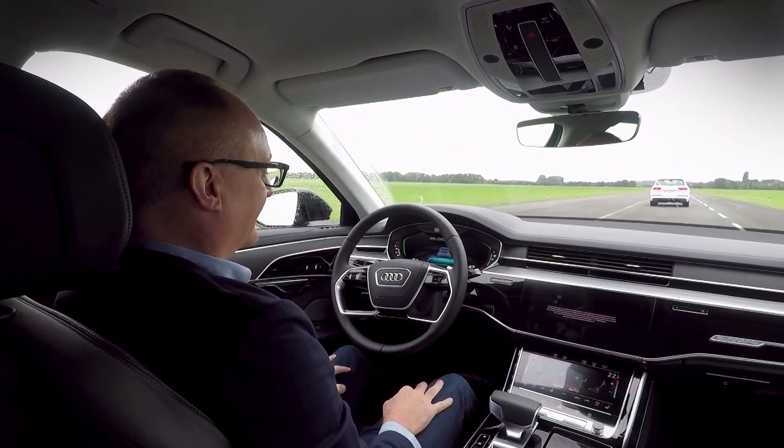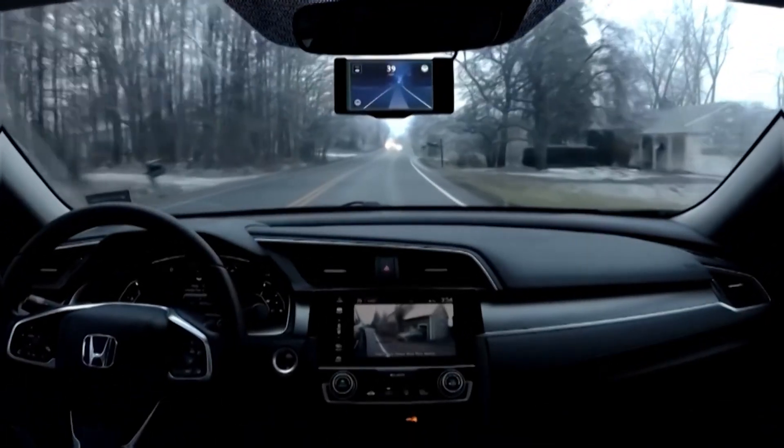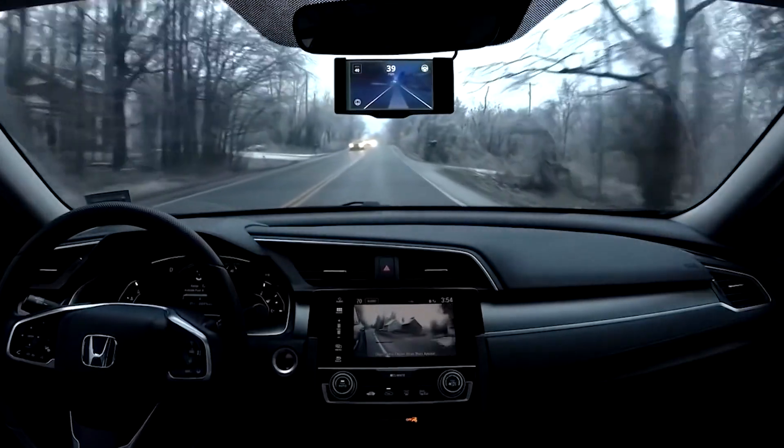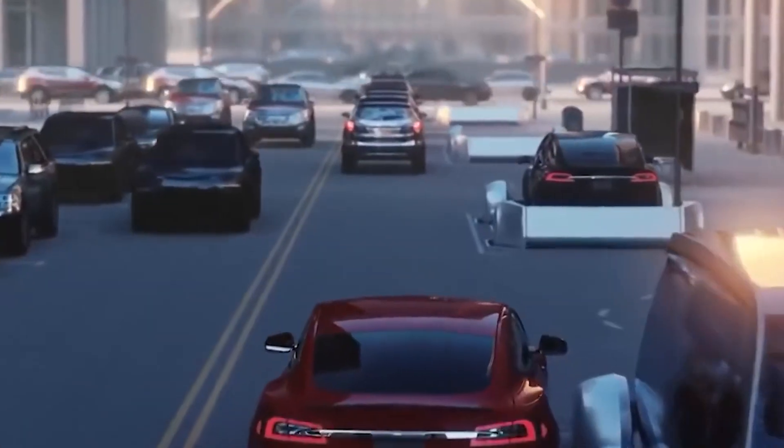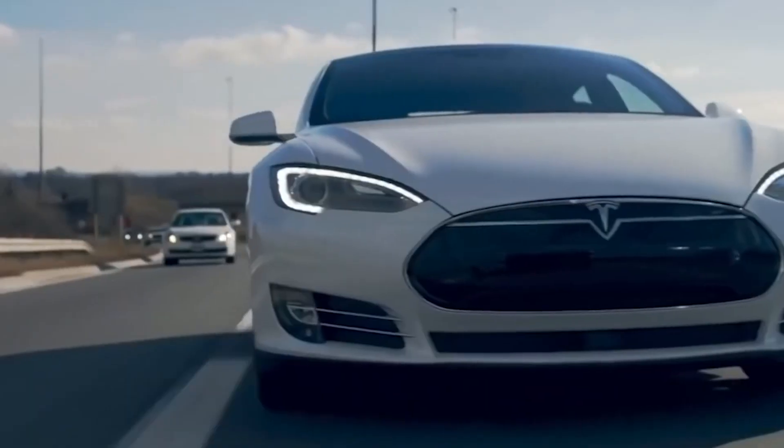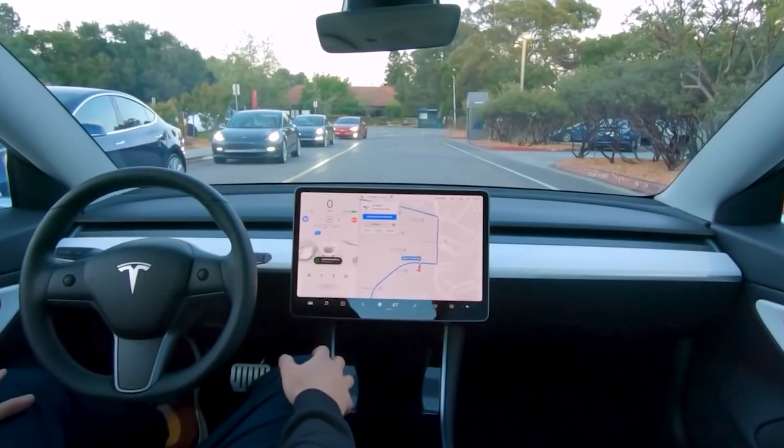But unfortunately, you will have to wait a little while before seeing these cars operate on the road, as the highest level of autonomy is currently at level three. This level involves environmental detection capabilities, meaning that a vehicle can assess the environment and can make informed decisions by themselves. However, a human must still be ready to override if needed.